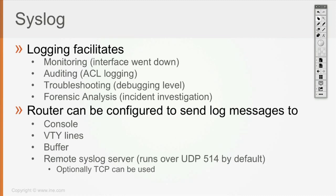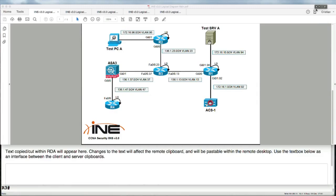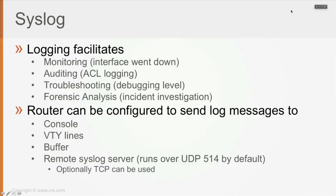A router — or more generally any network device, a switch or firewall — specifically a Cisco device, can be configured to send log messages to the console, to VTY lines, to the buffer, or to a remote syslog server. It can be configured to send log messages to one or multiple of those destinations simultaneously. For example, if you configure ACL logging and the router identifies traffic matching an ACL line with the log keyword, you may configure the router to send log messages to all of those destinations at the same time.